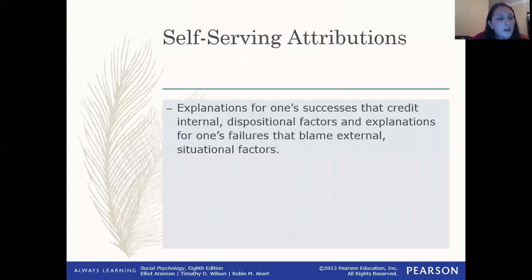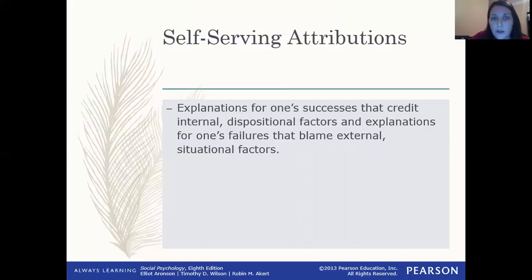Another concept is self-serving attribution. This is when we mess up — we fail a test, say something we shouldn't have, or do something we shouldn't have done. We tend to make attributions that are self-serving. We may say we failed the test because we were tired, or because it was too hard, or the professor is really hard. We tend to explain our failures because of the situation — 'I couldn't concentrate because something was going on outside.' Instead of saying 'I'm stupid,' we tend to say there was a situational factor.